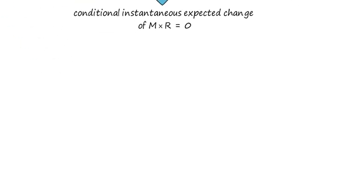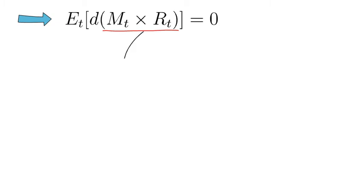So let's do the math. We want to set the conditional expectation of d(m times R) to zero. So we would now apply Ito's lemma to the product m times R to get their dynamic evolution.